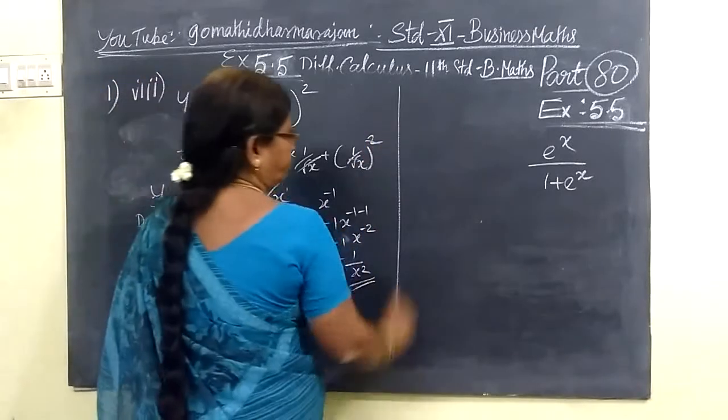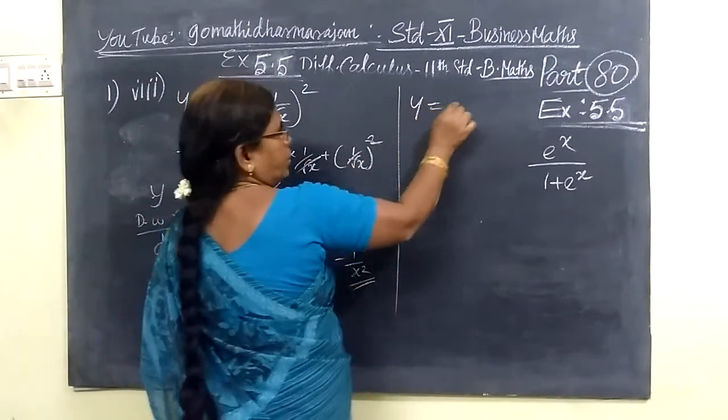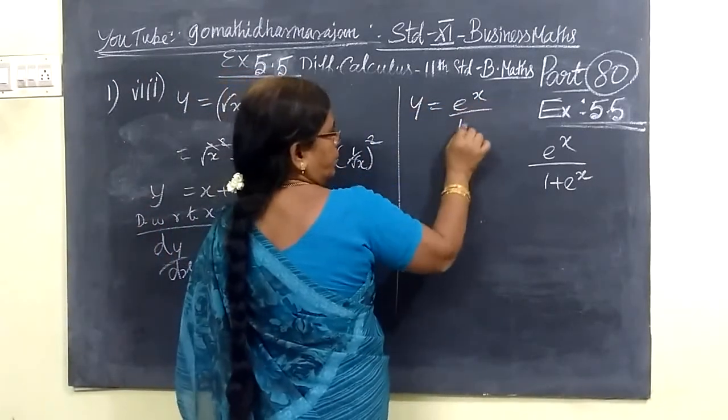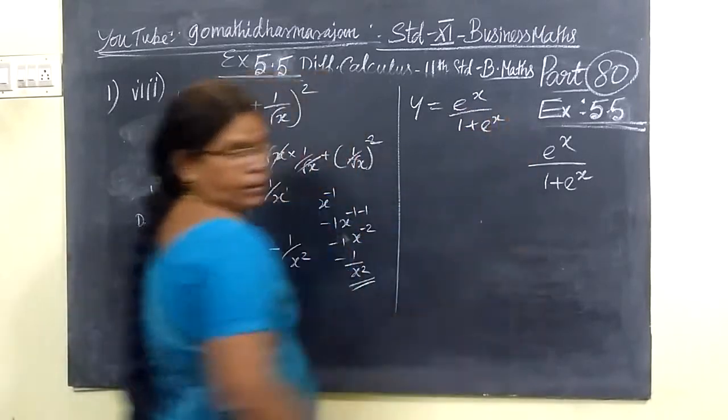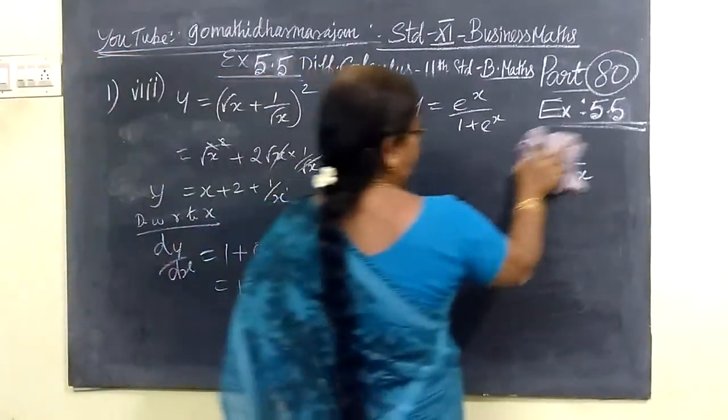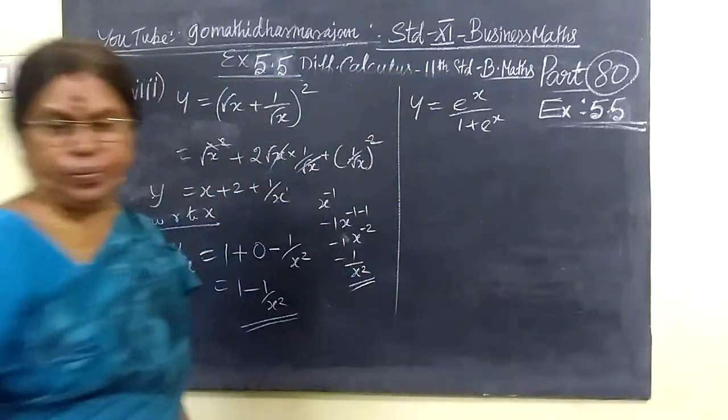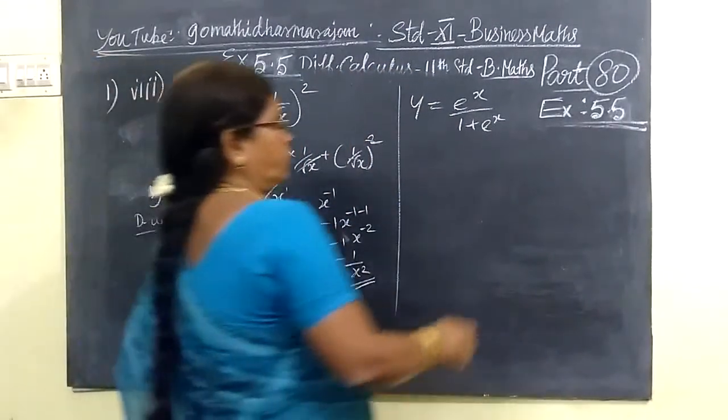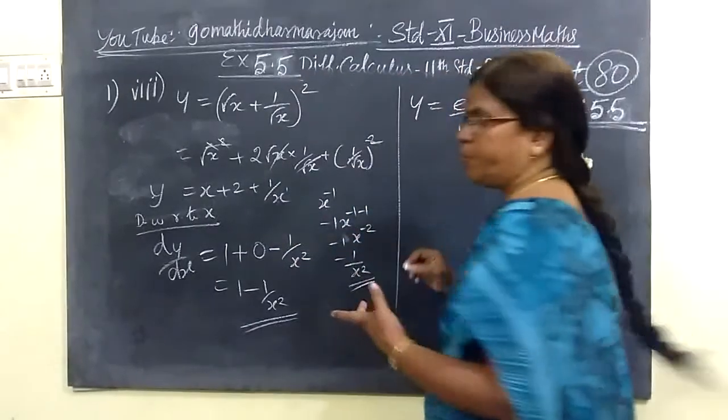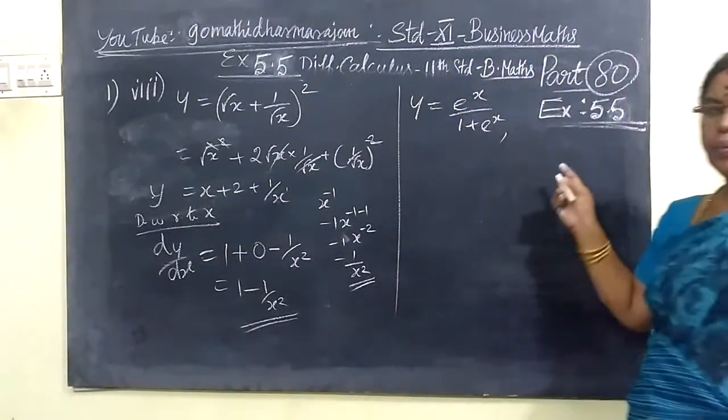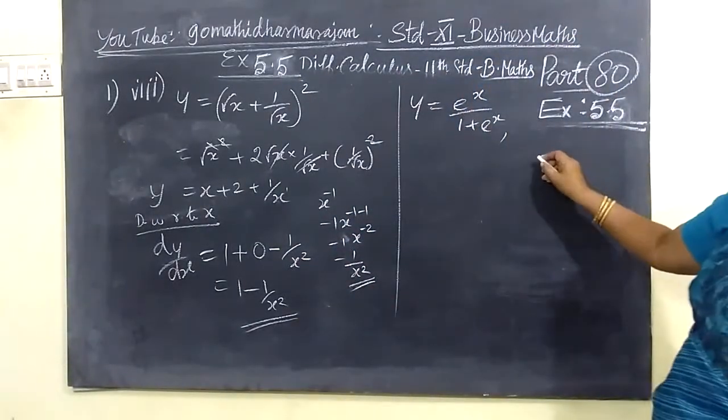Now, the next one is y equals e power x by 1 plus e power x. This is the U by V method, the quotient rule.